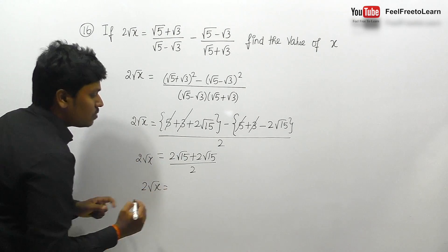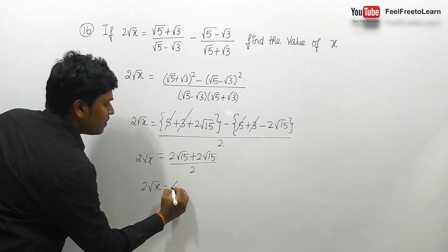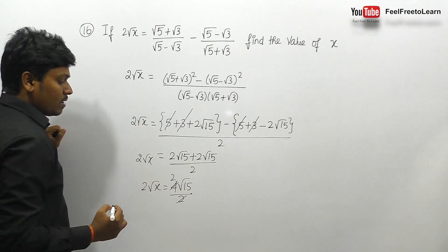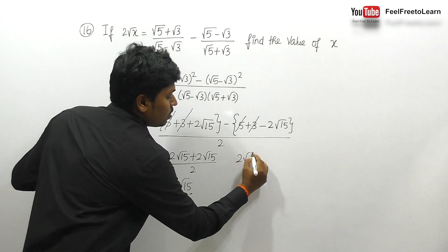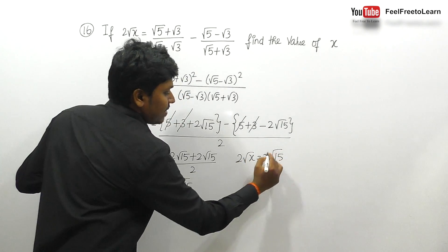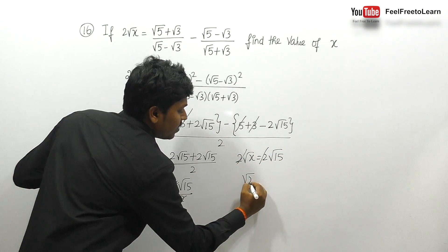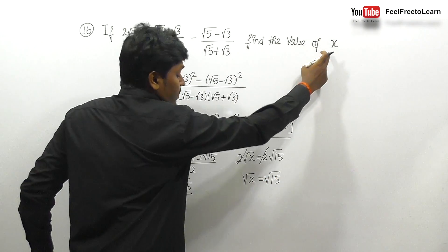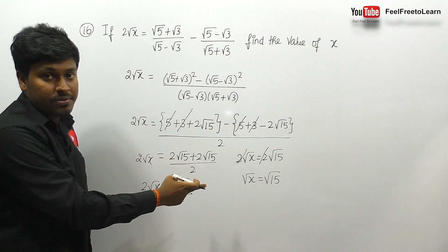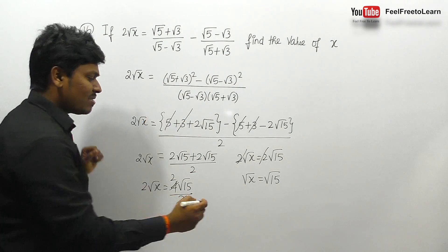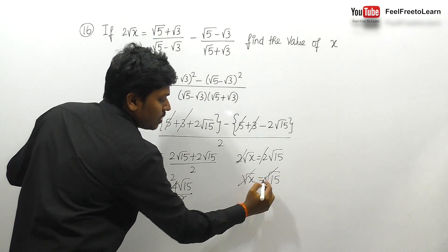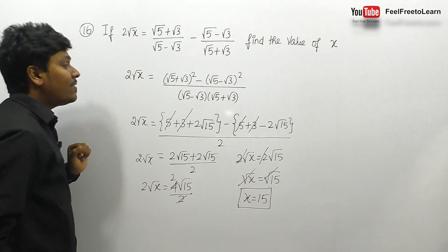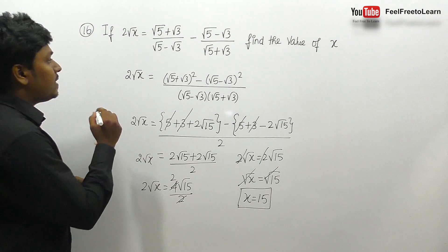2√x = 2√15. Cancelling 2 on both sides gives √x = √15, so x = 15. The answer for question number 16 is x = 15.